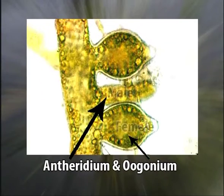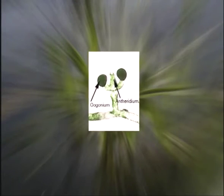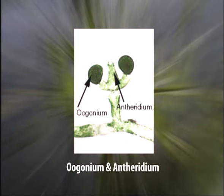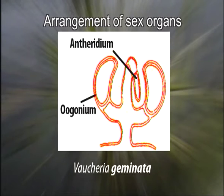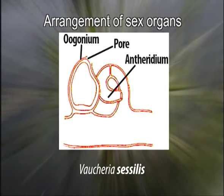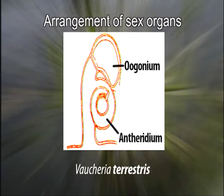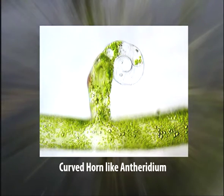The male sex organ is called the antheridium and the female sex organ is the oogonium. In monoecious or homothallic species, the antheridia and oogonia usually occur close to one another, at intervals along the same filament arising as lateral outgrowths. There is great variation in the arrangement of sex organs in different species or even different individuals of the same species. In Vaucheria, the mature antheridium is a cylindrical tubular structure strongly curved like a horn, though in some cases it is straight.